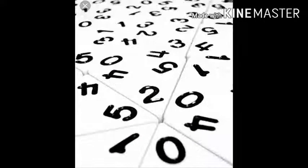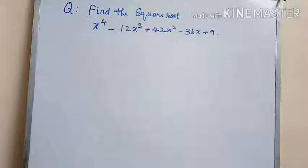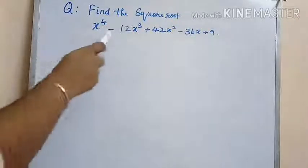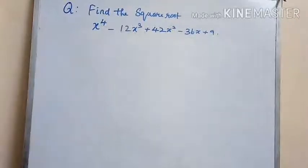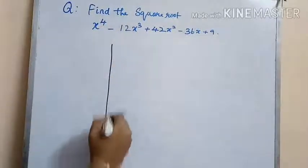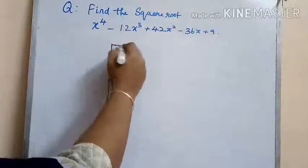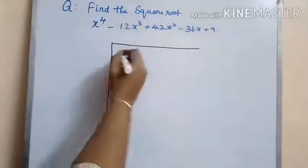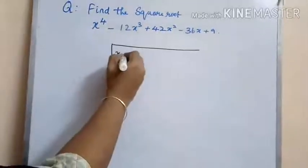In today's session of algebra we have the question: find the square root of the polynomial x to the power of 4 minus 12x cubed plus 42x squared minus 36x plus 9.